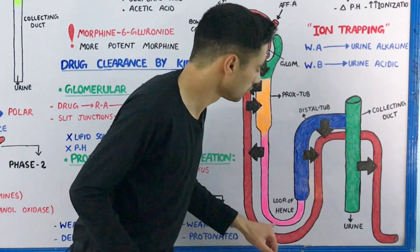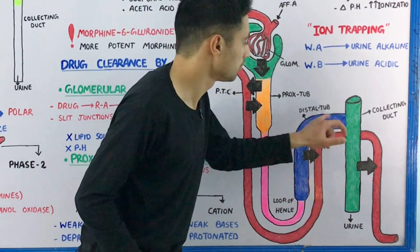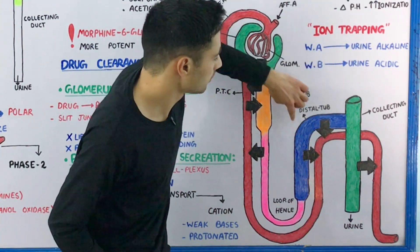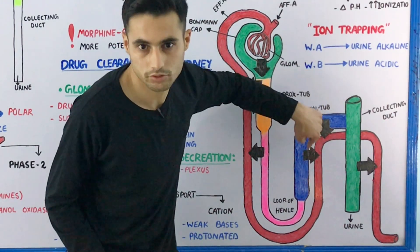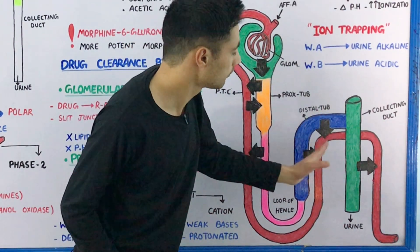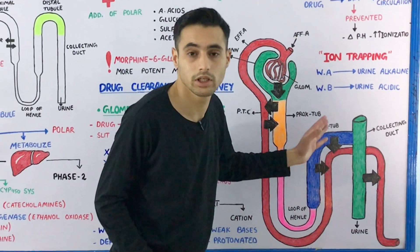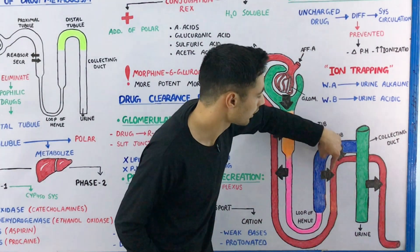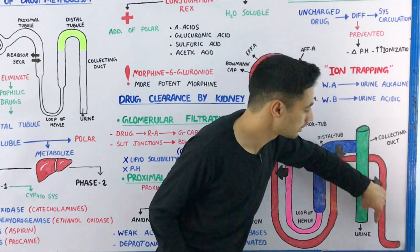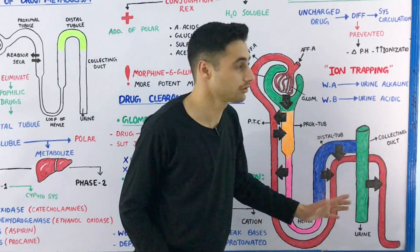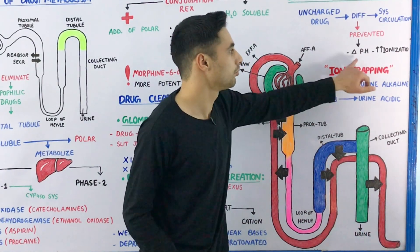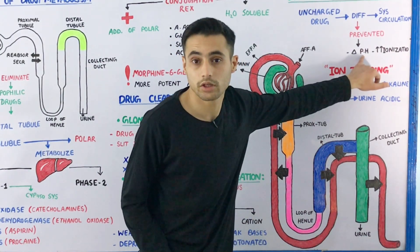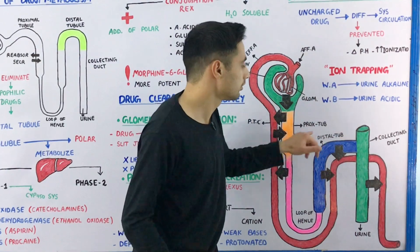In distal tubular reabsorption, uncharged drugs that pass through the proximal tubule, loop of Henle, and into the distal tubule can diffuse from the distal tubule back into the peritubular capillary network and re-enter systemic circulation. To prevent this diffusion, the pH is changed to make the drug more ionized.